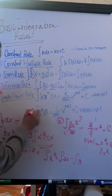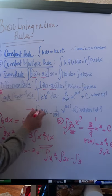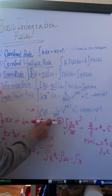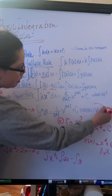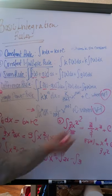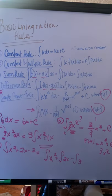This rule is without the constant. If the coefficient is 1, we can use this simple power rule. Note that this doesn't work when n equals negative 1. When n equals negative 1, we have a specific type of function we'll discuss tomorrow.